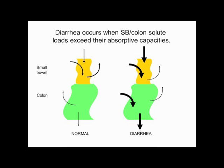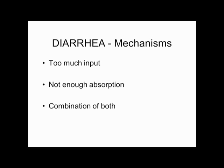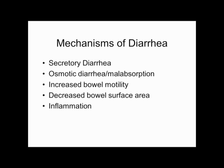Thinking of it as an output-input model: we have input, small bowel and colon reabsorption, and a small normal output. Problems can arise from taking in too much unabsorbable electrolytes and water, too much secretion, insufficient reabsorption, or combinations thereof. The key is to think about the underlying major mechanism — this correlates with diagnoses and disease.